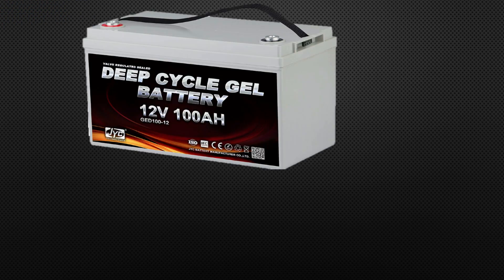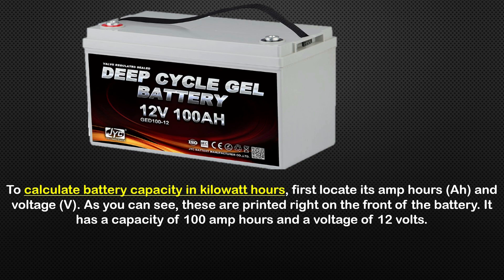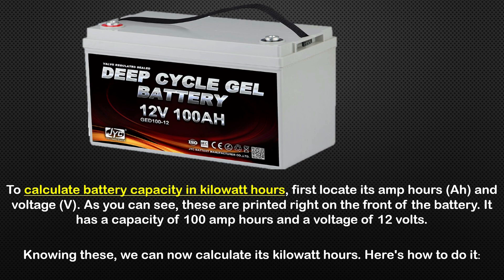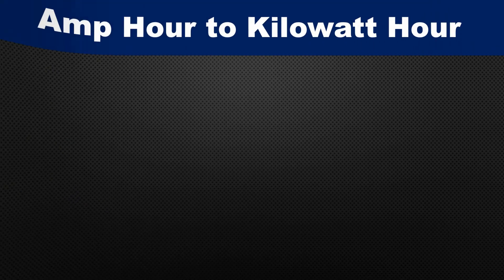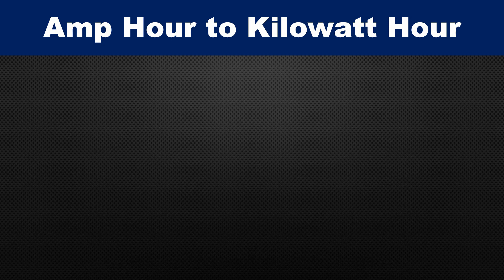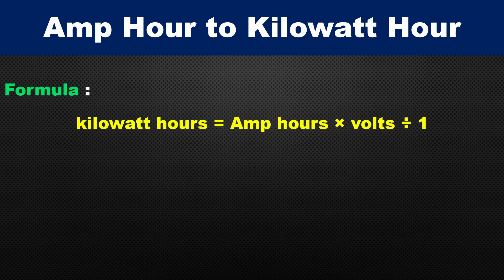For example, we have a battery whose ampere-hours is 100 AH and voltage is 12 volts. As you can see, these are printed right on the front of the battery — it has a capacity of 100 ampere-hours and a voltage of 12 volts. The formula for ampere-hours to kilowatt-hours is: kilowatt-hours equals ampere-hours multiplied by volts divided by 1000.